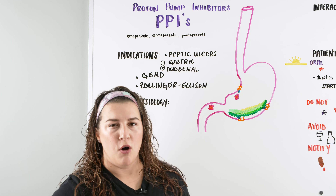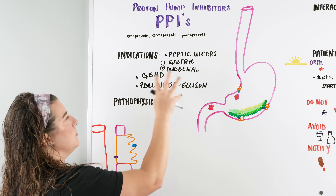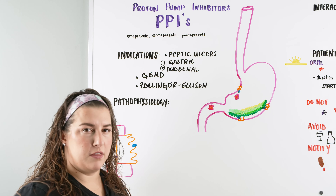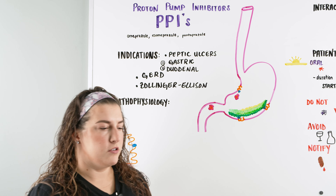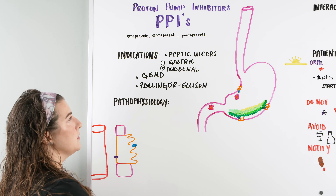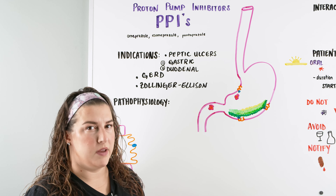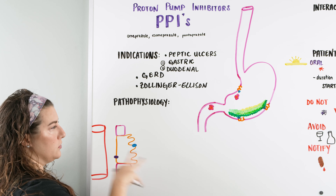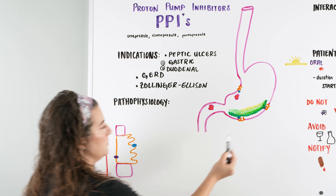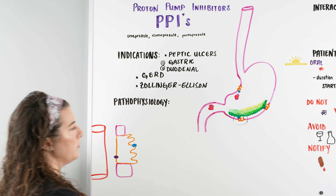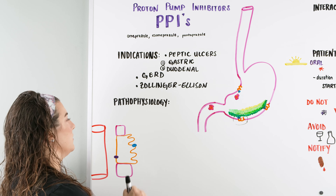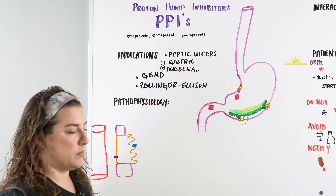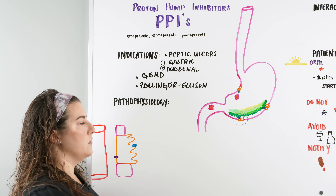So when we give someone a proton pump inhibitor, we're giving it commonly for these indications. But what do all these have in common? That brings us to the pathophysiology. If you pay attention to this and understand it, you're going to understand what a proton pump inhibitor does, how it works in the body, and why it benefits patients. We're going to focus on parietal cells particularly, because that's where we develop a lot of our gastric juices.